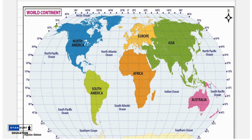So how many continents are there on Earth? We have divided them into seven: Asia, Africa, North America, South America, Antarctica, Europe, and Australia.